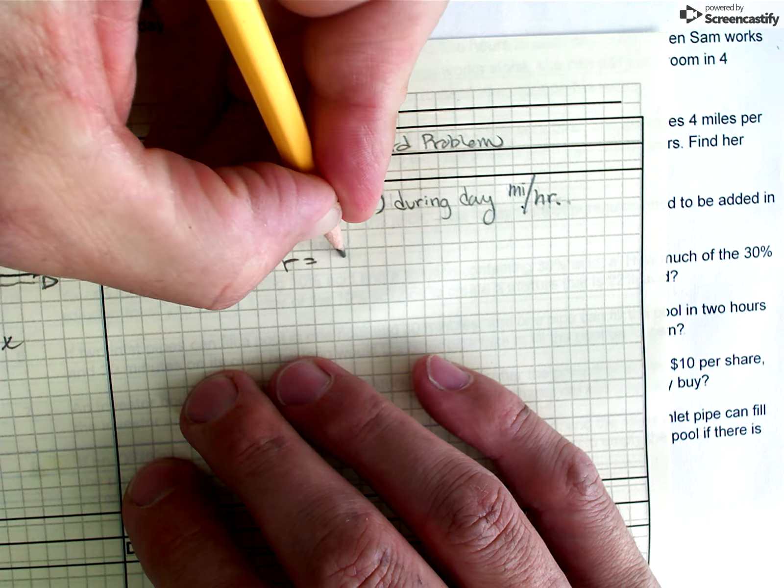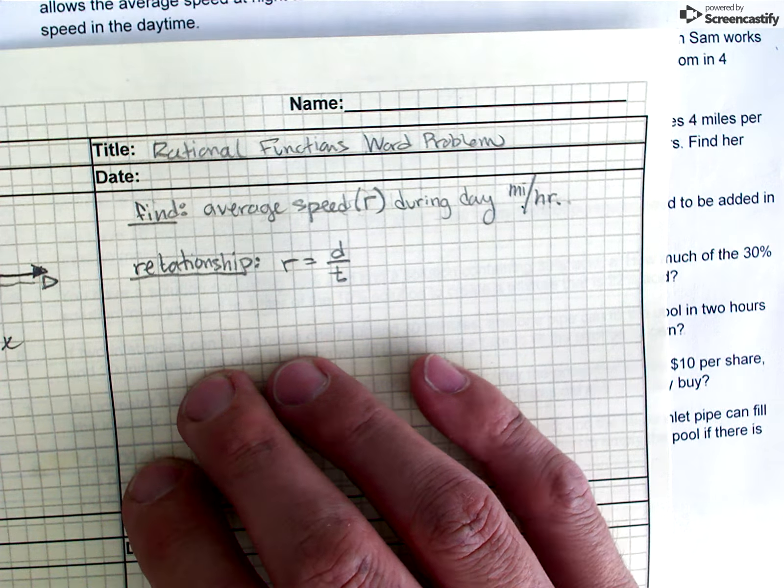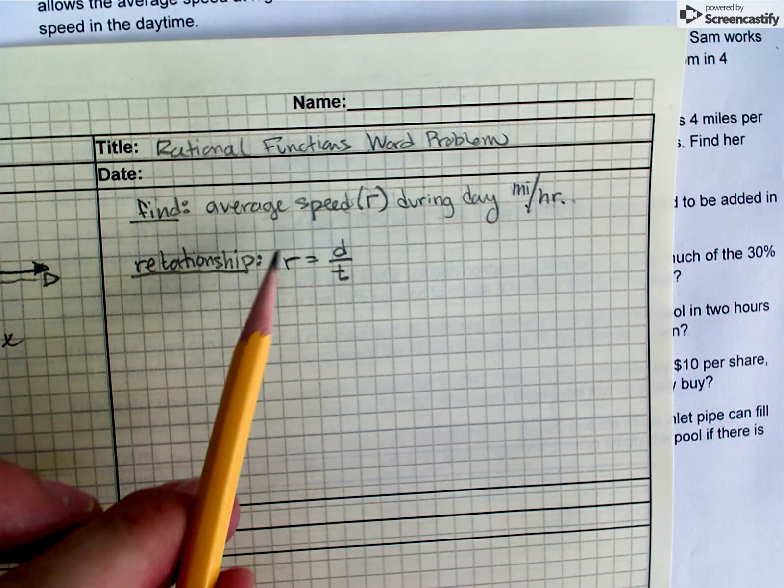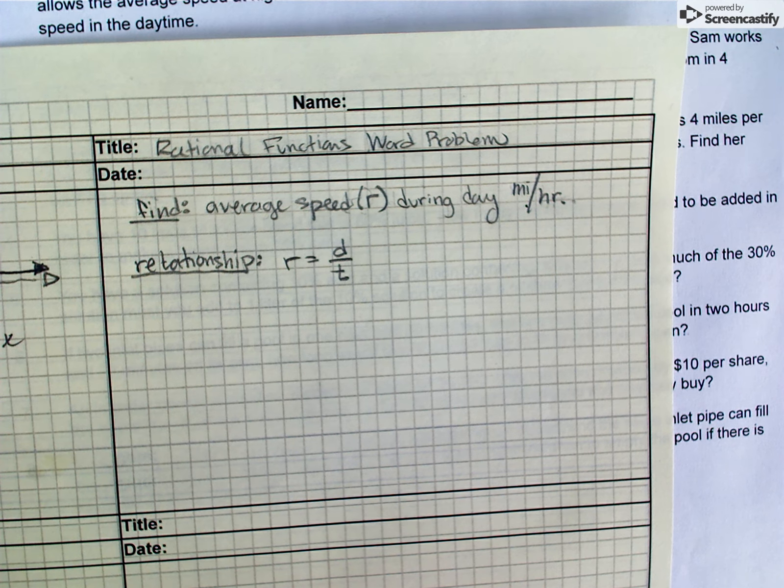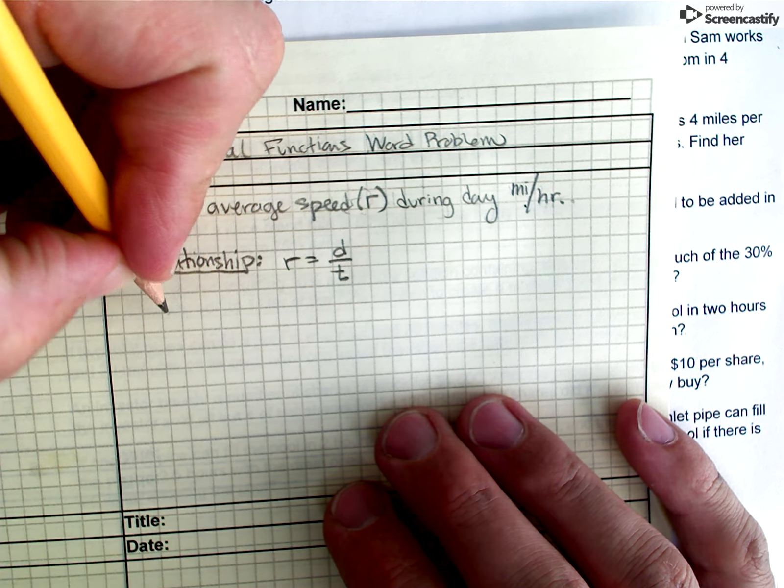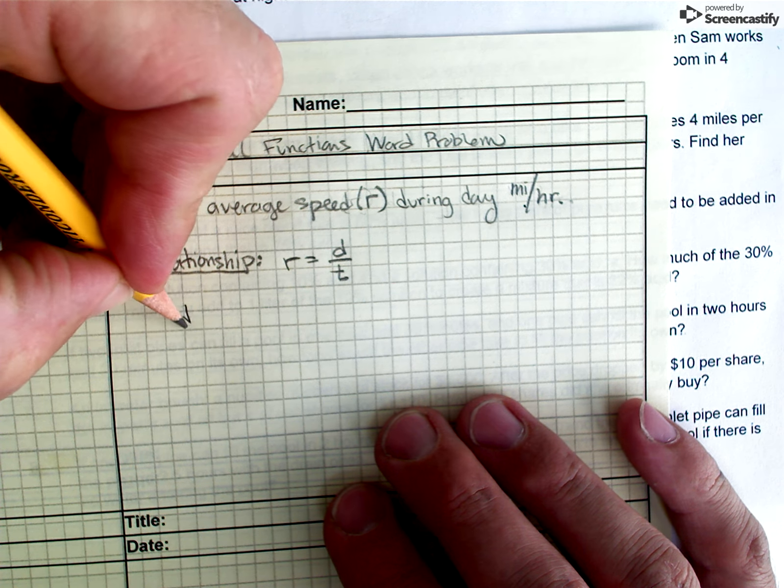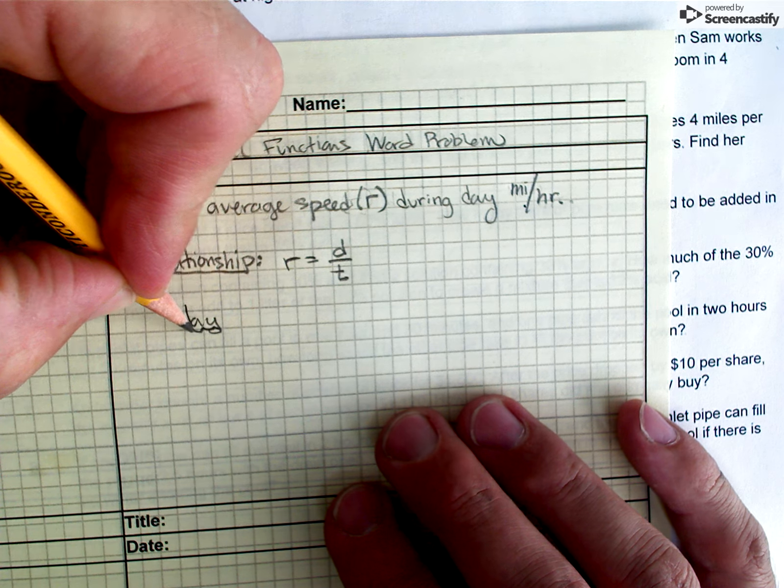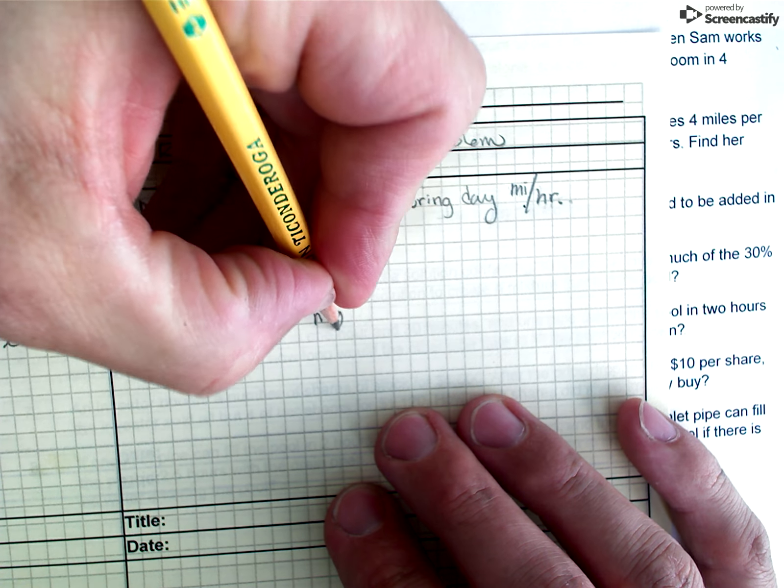And fundamentally, this is a rate of speed problem. And so I use the rate of speed equation, R equals distance divided by time. And I'm going to think about that relationship in two different ways. I'm going to think about it in the context of this problem during the day and also during the nighttime.